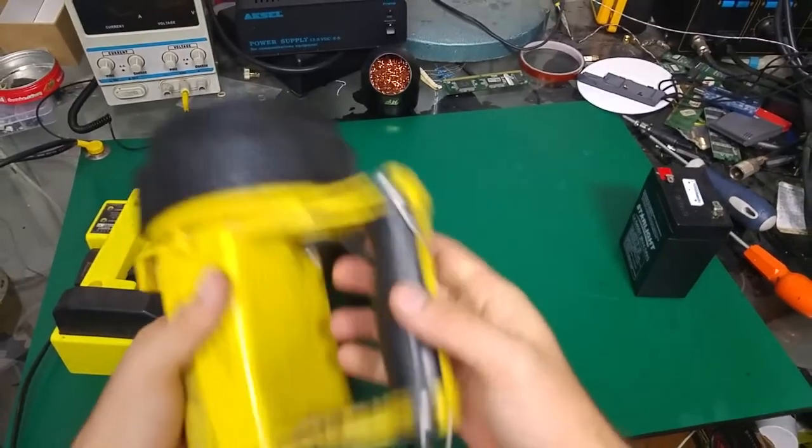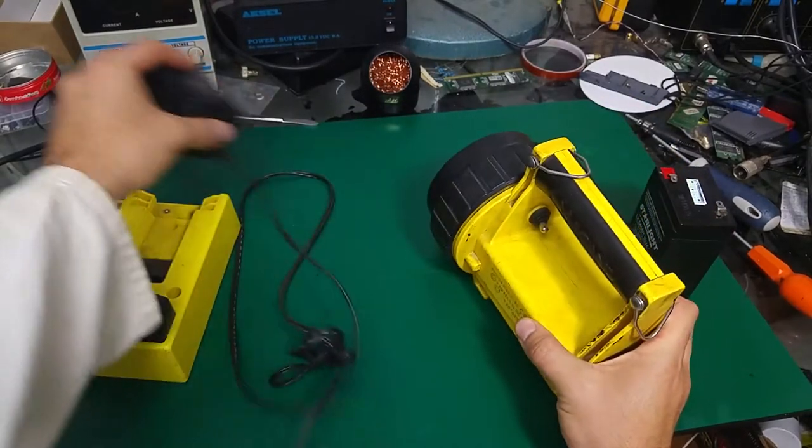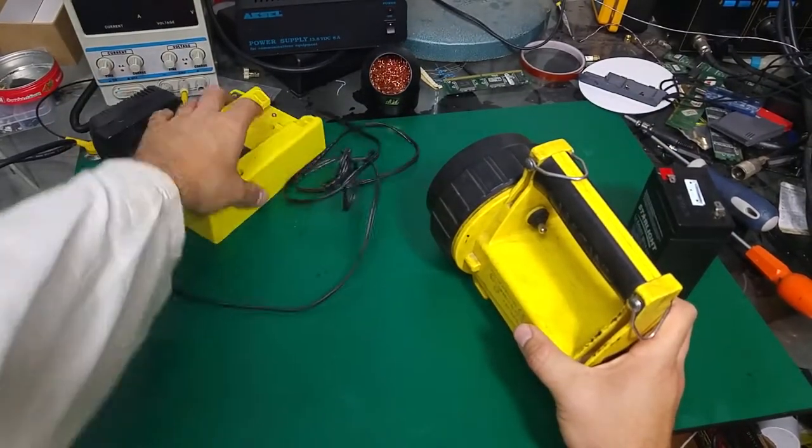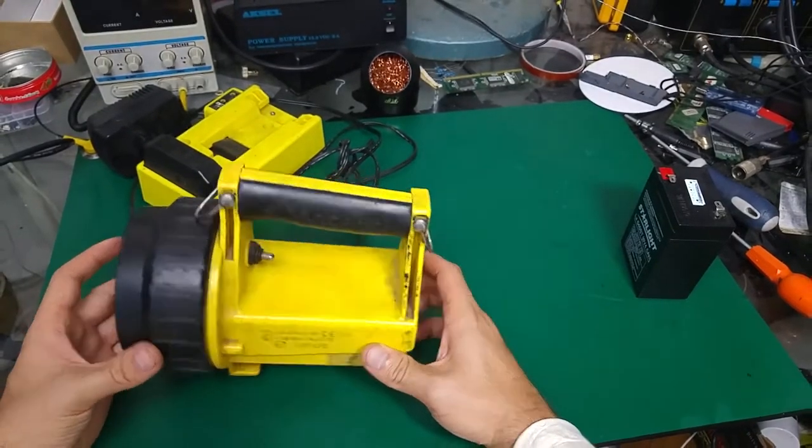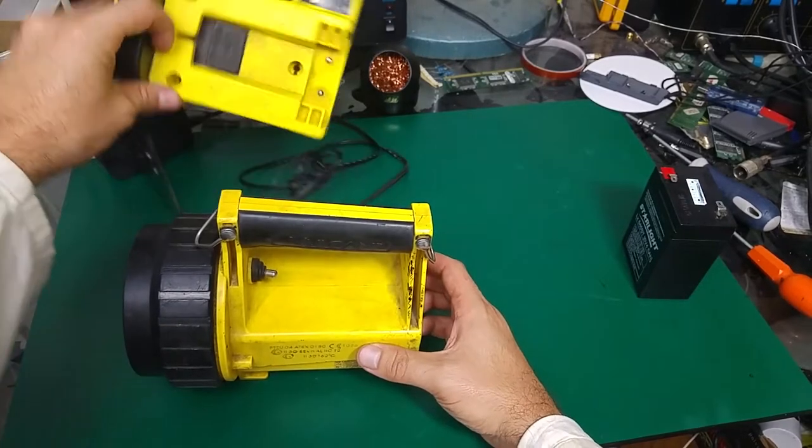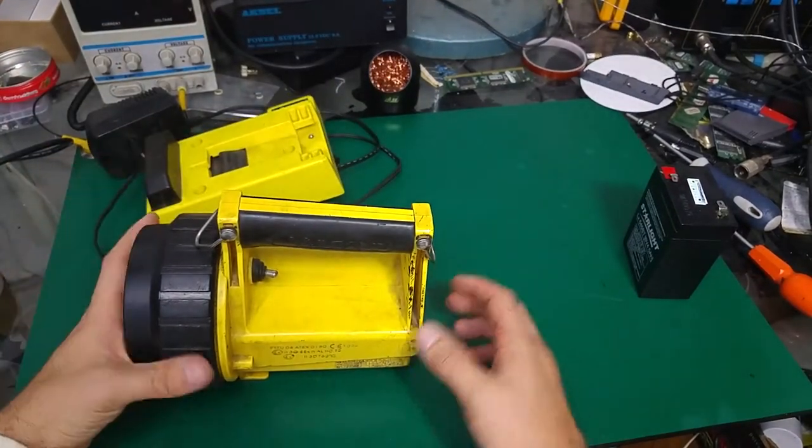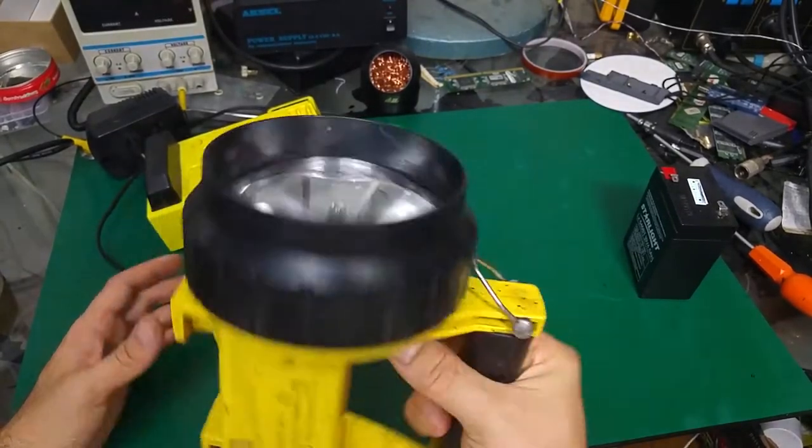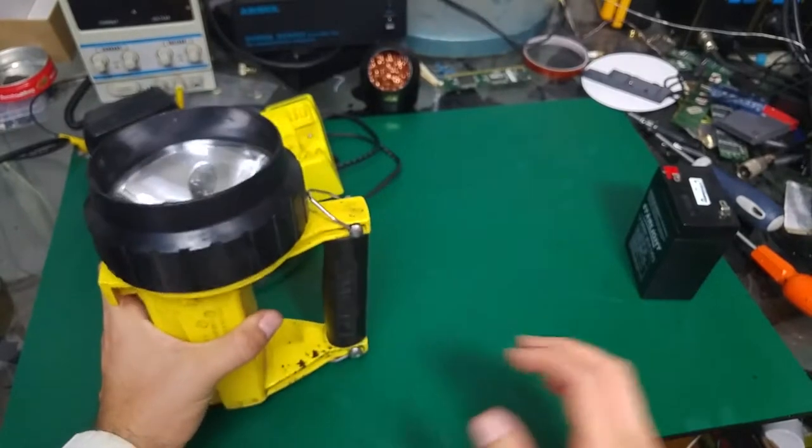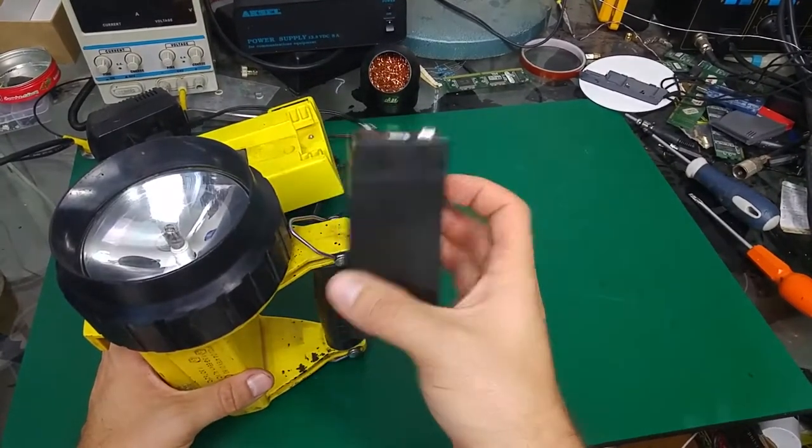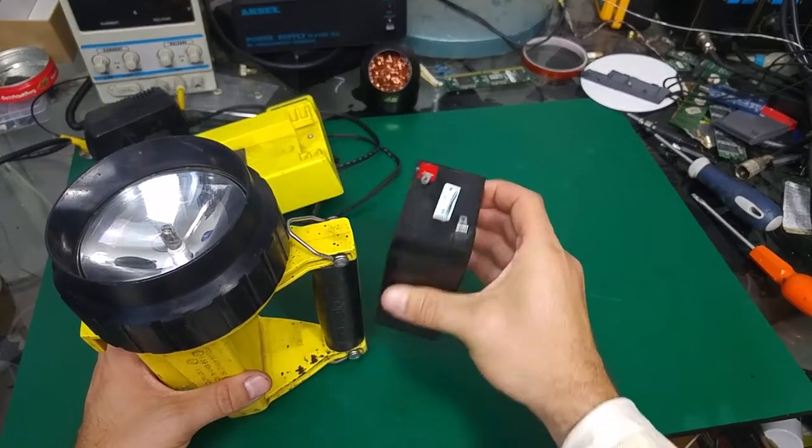The problem is it does not work, and the question is why. It's because the internal battery completely lost its capacity. If you hook it up on the charger it shows that it's fully charged but it does not work. So we are going to open it and replace the AGM battery fitted inside.